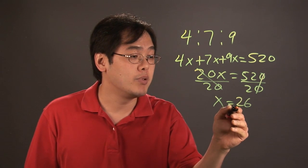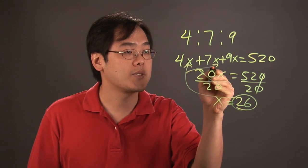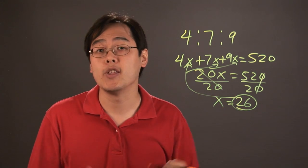Now, what that basically means here is you plug in the 26 everywhere you see x. And then this will be 4 times 26, 7 times 26, and 9 times 26, and you'll be good to go.